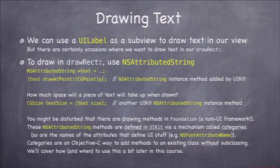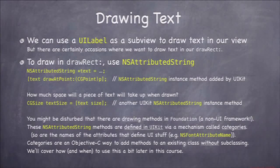UIKit adds them even though it's in a completely different framework, using a mechanism in Objective-C where you can add methods to classes without subclassing them. It's called categories. It's a little Wild West — that's why I don't show you until about halfway through, because it can be abused, this mechanism. But that's how this is working, for those of you who are wondering.